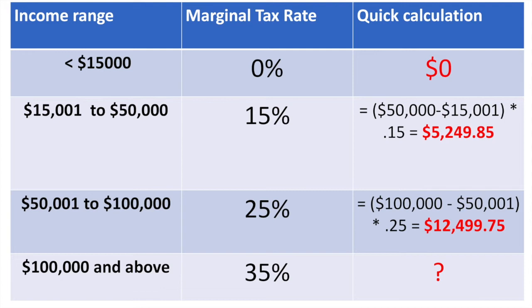Now the fourth and final bracket consists of all income above $100,000. Since there is no upper bound, we cannot calculate a quick calculation figure. All income above this point is taxed at 35%. To illustrate this, let's look at an example.